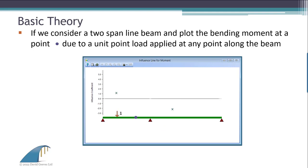This process can be repeated for additional locations until we have enough points to draw a curve between them. This curve is known as an influence line.